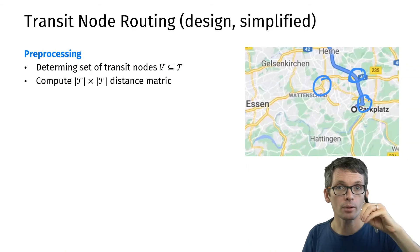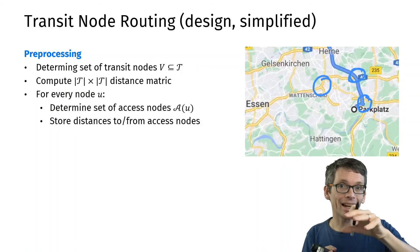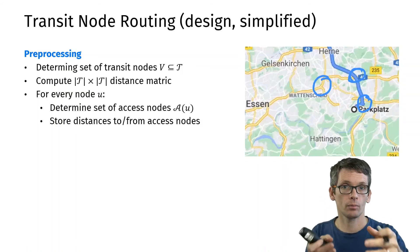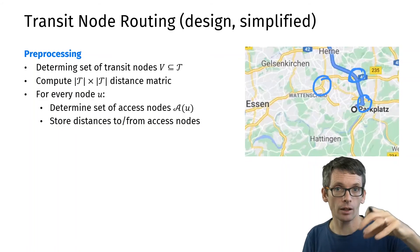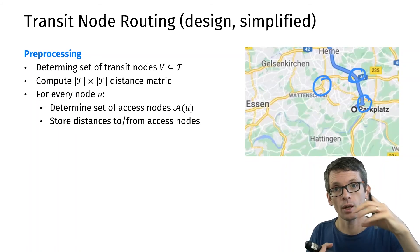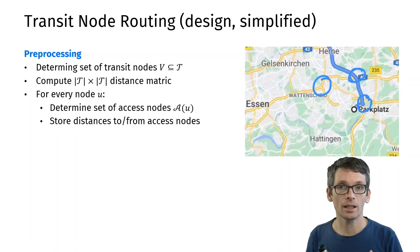But now we also have to get to those transit nodes. So for any starting location I compute its access nodes, which are transit nodes, but the ones that that starting location uses. Same for target locations. I have access nodes that then reach that target. And I pre-compute also all of those distances.